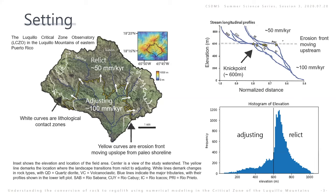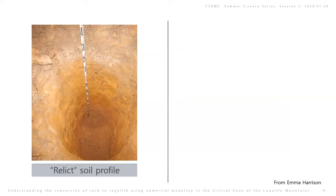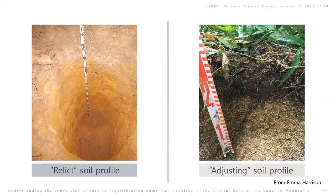The channel profile and histogram of elevation results also indicate the transient landscape. We can see a separated area clearly around 600 meters. Some research shows the adjusting area is propagating upstream. We can see silt-clay size grain in the relict area. Meanwhile, we can see sand and granular size grain in the adjusting area.